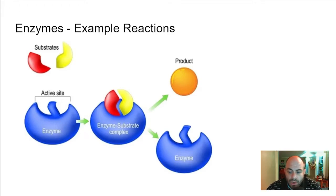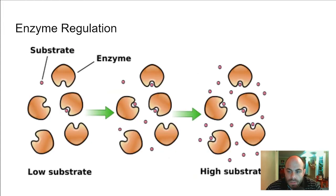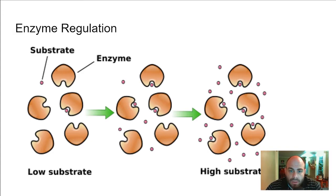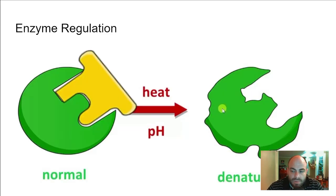Let's talk about enzyme regulation. The body is always trying to regulate enzyme function — maybe it doesn't need the enzyme, or enzymes cost energy to make. One way the body regulates enzyme function is by regulating the amount of substrate. If you haven't come in contact with a particular substrate, you don't need the enzyme to break it down. Substrate concentration directly affects the rate of enzyme reactions — if there's no substrate, the enzyme isn't doing anything.